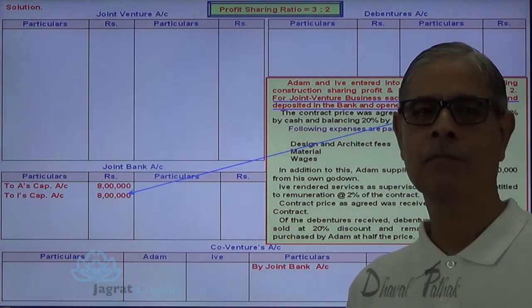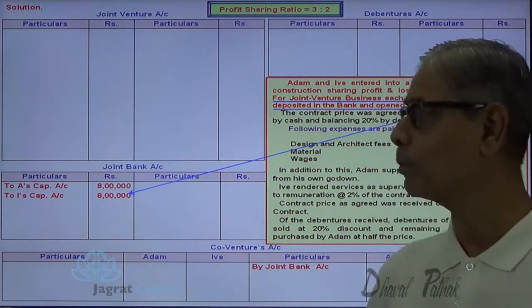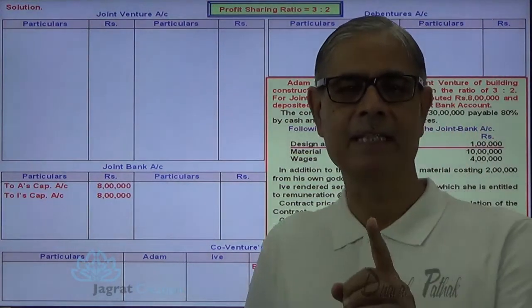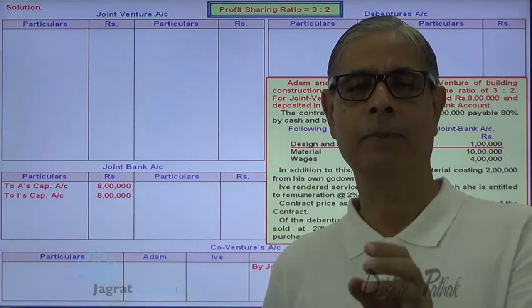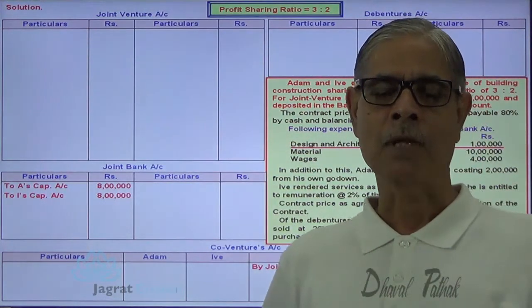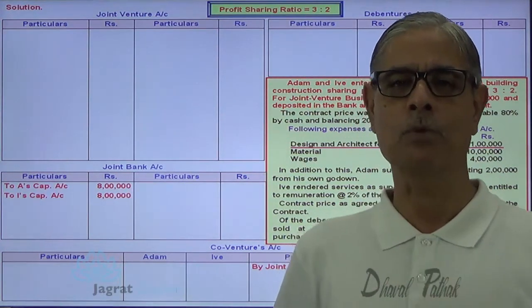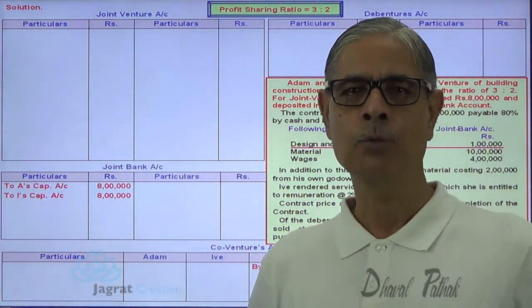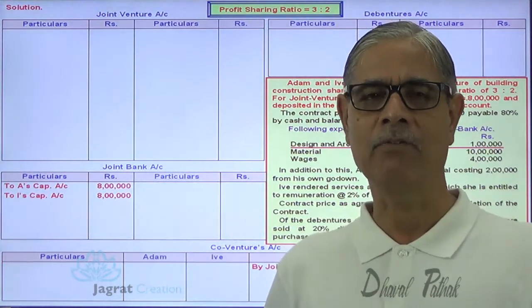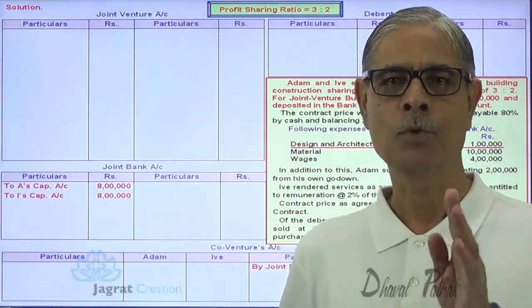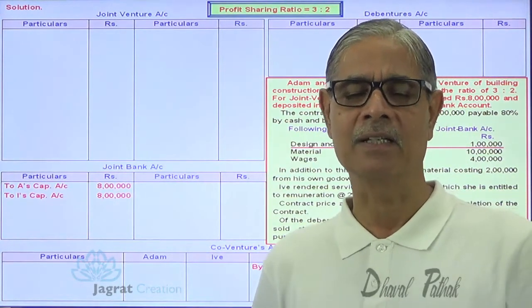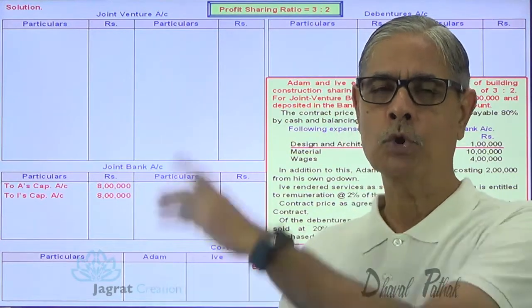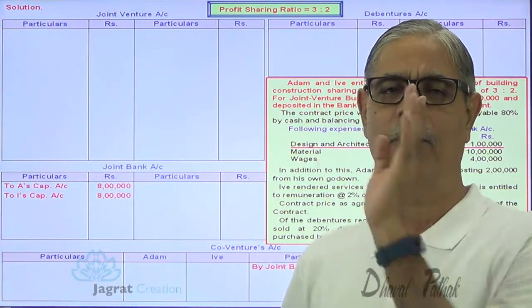After contribution of the capital, they started with the construction work and the expenses paid from joint bank are already given. The expenses paid are not debited to respective expense accounts, but they are to be debited to joint venture account. The joint venture account is a functional account prepared for the purpose of finding out the profit or loss of joint venture business. It is prepared on the basis of the matching concept and is alike to trading and profit and loss account. All expenses, purchases, and even the purchase of assets will be debited to joint venture account, because the going concern concept is not applied to joint venture business — on completion of the task, the partnership comes to an end.